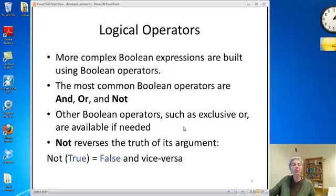So NOT is the simplest one. It takes one argument and it reverses its truth value. So if I apply NOT to the constant true or to any boolean expression whose value is true, it will give me the result false. And vice versa, NOT of anything that's false gives me a true.